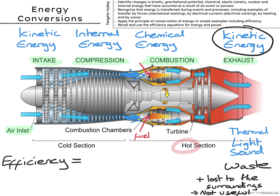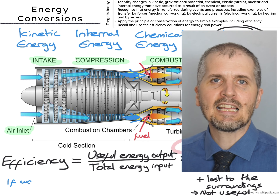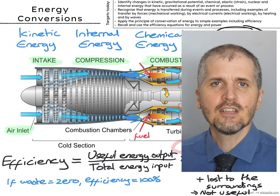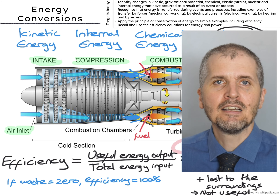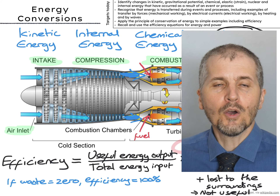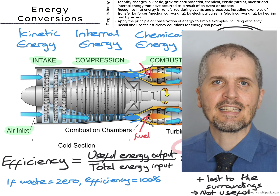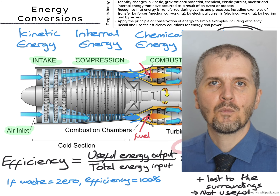Efficiency is calculated using: efficiency equals useful energy output divided by the total energy input, times 100%. Ideally we'd get the waste down to 0% and therefore the efficiency up to 100%. Because all of that waste basically means we're burning more oil than we need to, or mining more silicon for solar panels, or making more concrete for dams. Every single bit we're wasting is using up more of the world's resources, so we should be aiming for 100% efficiency whenever possible.